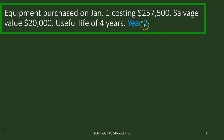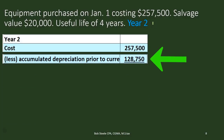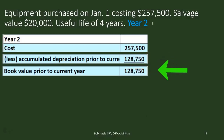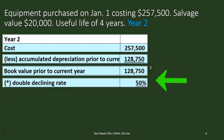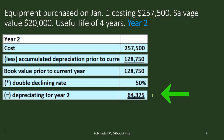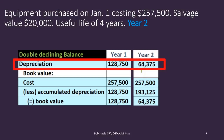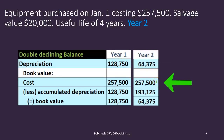For year two, we take the cost less the accumulated depreciation from the prior year — $128,750 — to get the book value before year two's depreciation. We then multiply by the 50% double declining rate: $128,750 × 50% = $64,375 depreciation for year two. Comparing year one and year two, depreciation dropped significantly. This is the front-loading effect of double declining — much higher in early years, declining sharply in later years.